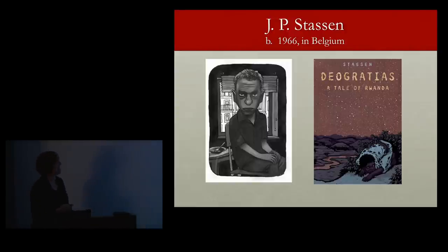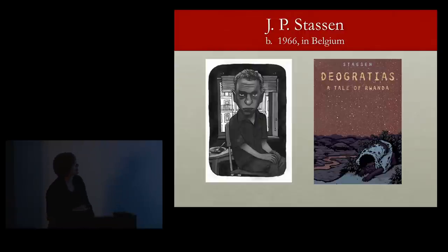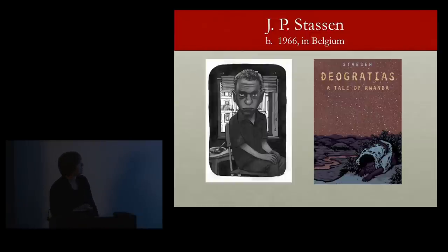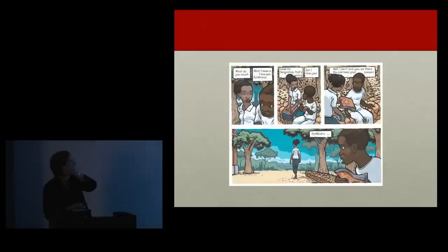The Rwandan genocide was also a very shocking one. J.P. Stassen is Belgian — his mother actually is a Holocaust survivor, which may have made him sensitive to these stories. He created probably the most classic work about the Rwandan genocide, called Dio Gratias, which tells the story of a Hutu boy. He draws it in a very different way — especially scenes before the conflict, which are very reminiscent of a famous Belgian artist he follows. You see crisp panels, everything separated, orderly with a lot of white space and sharp borders.